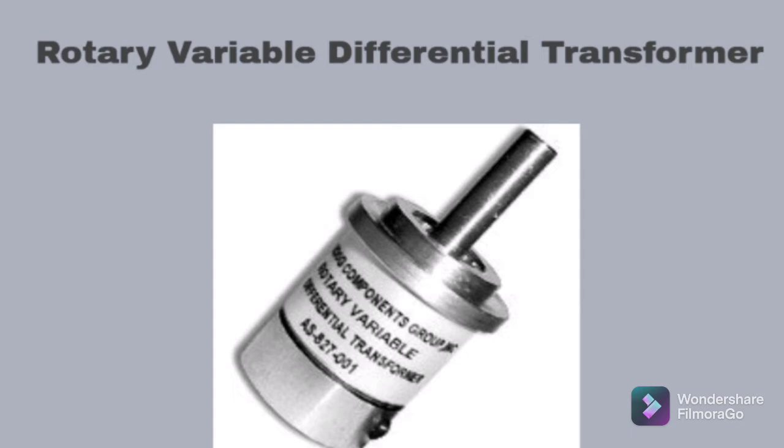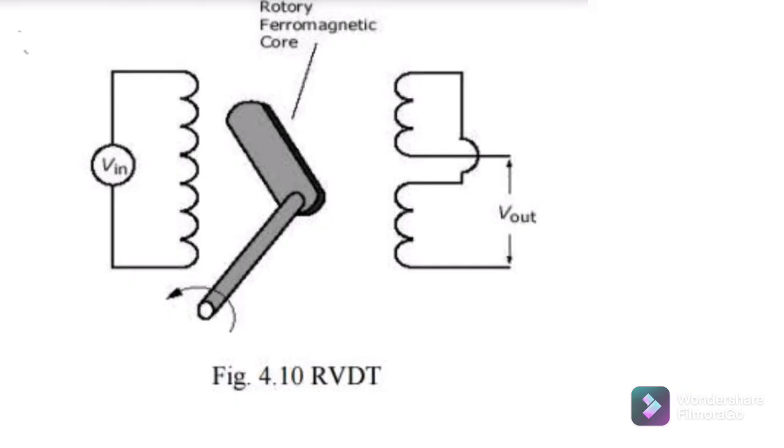Both the RVDT and LVDT working are very similar, but LVDT employs a flexible iron core for displacement measurement, whereas in RVDT employs a cam type core. This core will turn among the two windings of the transformer using the shaft.